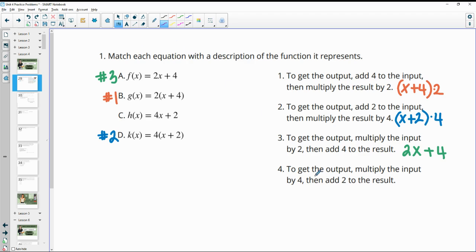And then number four, to get the output, multiply the input by 4. So multiply your input by 4 and then add 2 to that. So 4x plus 2 and we see that as C.